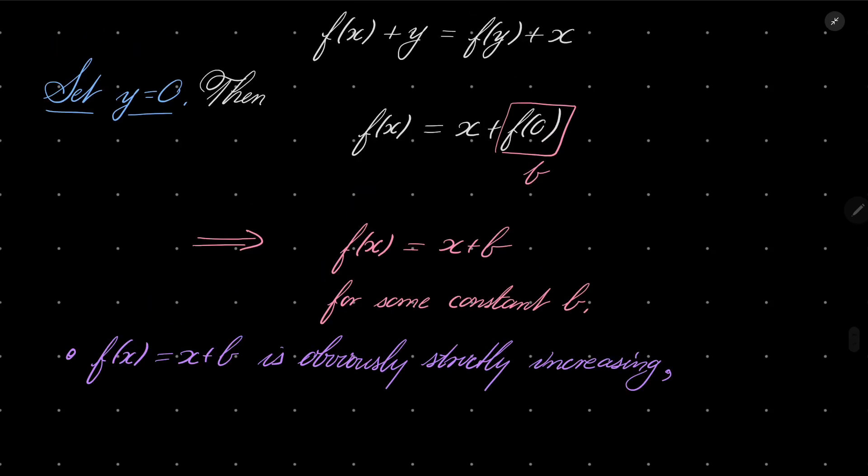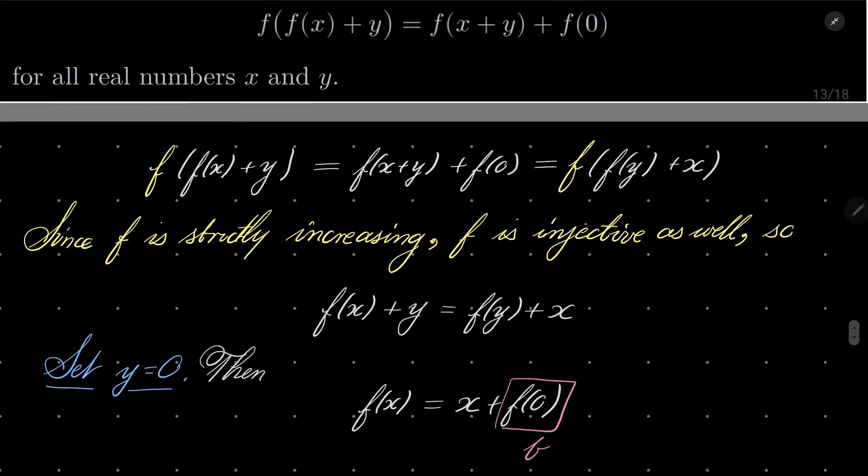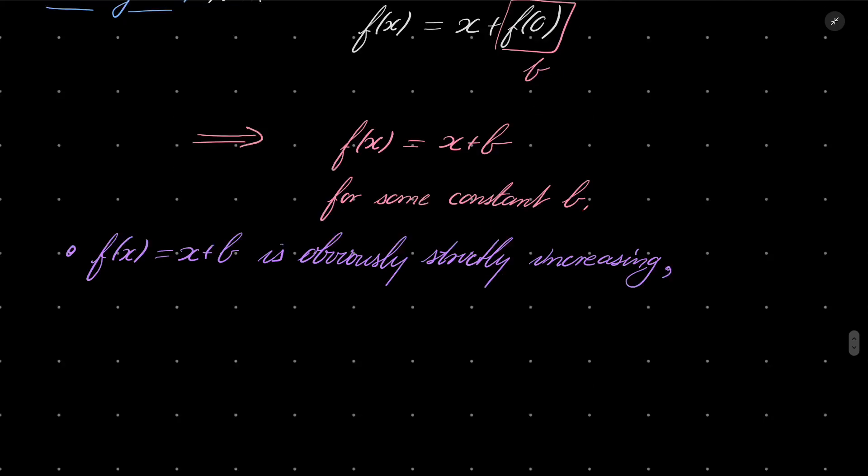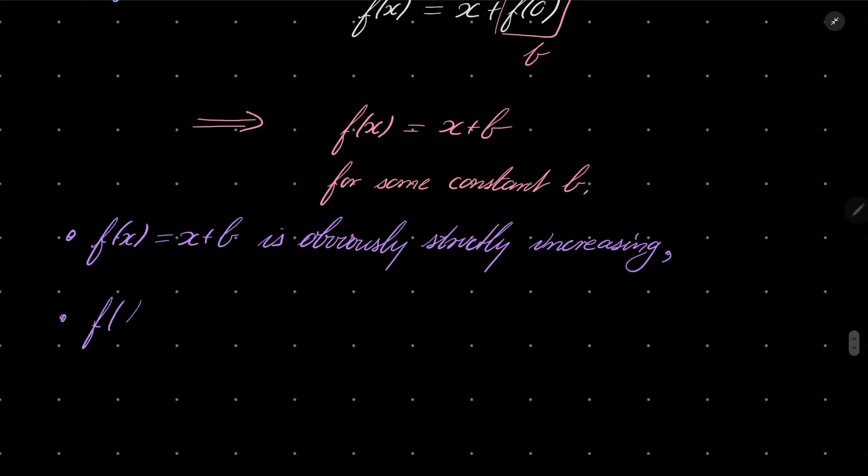And let's compare both sides of our equation. So f of f of x plus y equals, well, f of, instead of f of x, I can write x plus y plus b. And this is x plus y plus 2 times b.